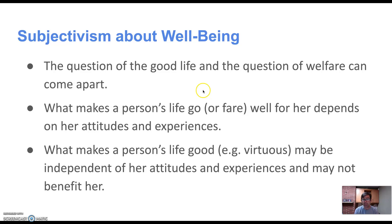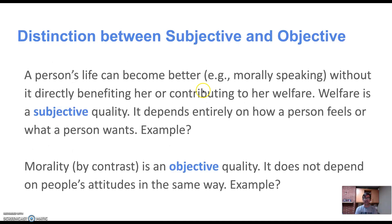Being virtuous might not benefit me — it may benefit other people, but might not benefit me. So this is the kind of starting point for Heathwood: that there seems to be something about well-being that depends on a person's attitudes and experiences in a way that morality doesn't. Think about examples of ways in which morality doesn't depend on people's attitudes — that something can be right or wrong no matter what people believe or feel or desire. Whereas the way we think about welfare may be more subjective, depending on the individual's feelings and wants.